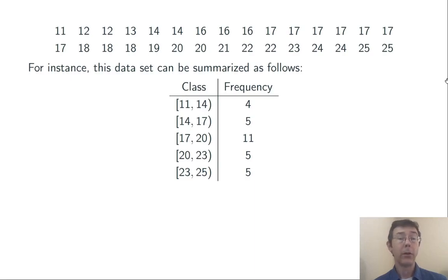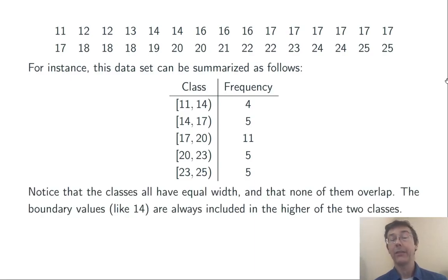This means that the boundary values 14, 17, 20, and 23 always go in the next class up.